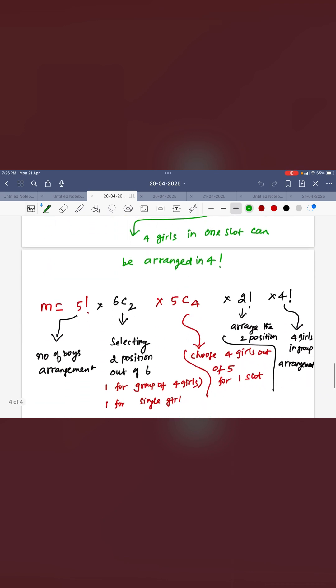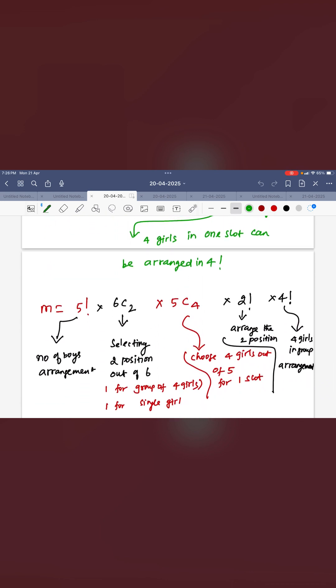You can see the M is 5 factorial that is number of boys arrangement. 6C2 for the selection of 2 positions out of 6. 5C4 for 4 girls out of 5 selection. And then 2 factorial arrangements of 2 positions. And 4 factorial is internal arrangements of the 4 girls.